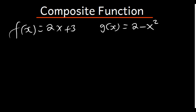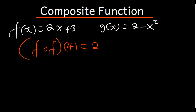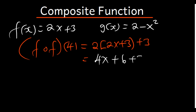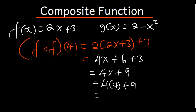Now let's find f of f of 4, where f(x) = 2x + 3. In the function f, where there is x, we put f again. So it's 2(2x + 3) + 3, which gives 4x + 6 + 3 = 4x + 9. Now we substitute x = 4: 4 times 4 plus 9 equals 16 + 9, which gives us 25. So 25 is the final answer.